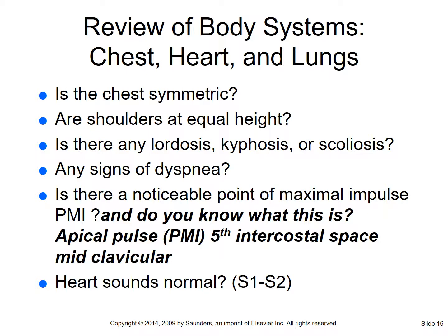Go through the five points with the diaphragm listening for S1 and S2, then go back through with your bell listening for abnormal sounds - hopefully there aren't any - such as extra sounds, galloping (which could be an S3 or S4), or murmurs like a gurgling or turbulent blood flow. A mnemonic to remember the five points is 'A Pig Eats Too Much' - standing for Aortic, Pulmonic, Erb's point (second pulmonic), Tricuspid, Mitral.